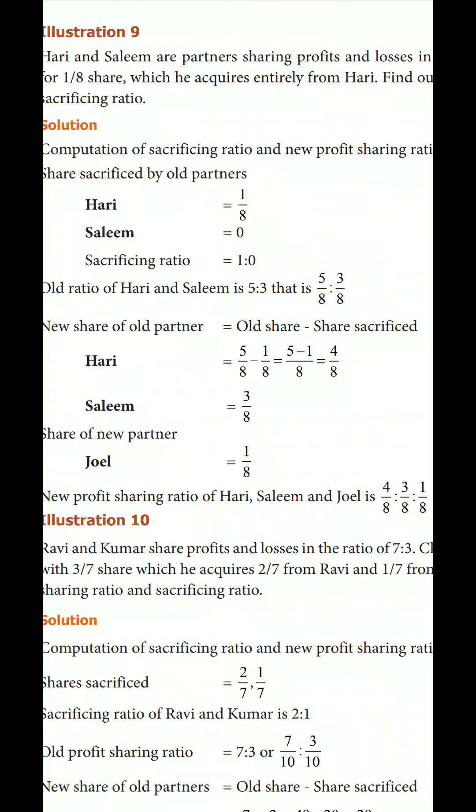5/8 minus 1/8 equals 4/8. So Hari's new share is 4/8. For Salim, the old share is 3/8.